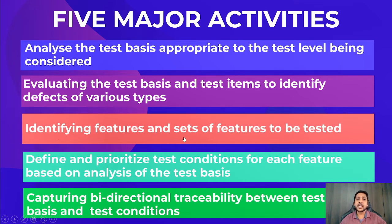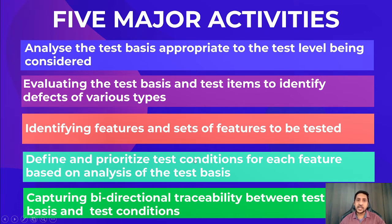Then: identifying features and set of features to be tested. We need to first identify what content we can test. After that, we define and prioritize the test conditions for each feature based on the analysis of the test basis. First we analyze the requirement, find the testable features, derive test conditions, then prioritize those test conditions.